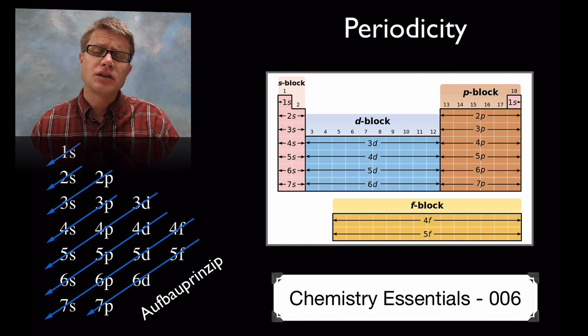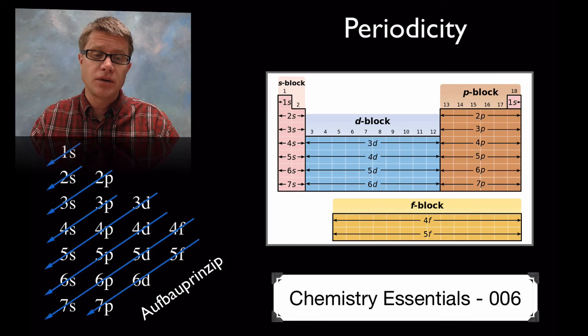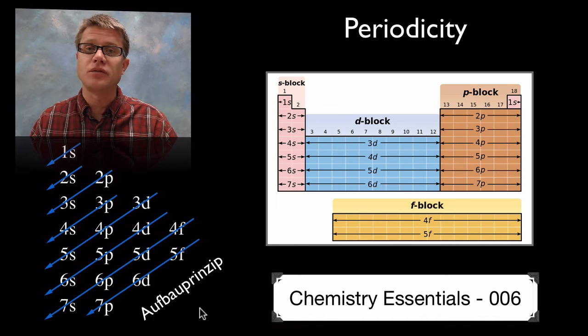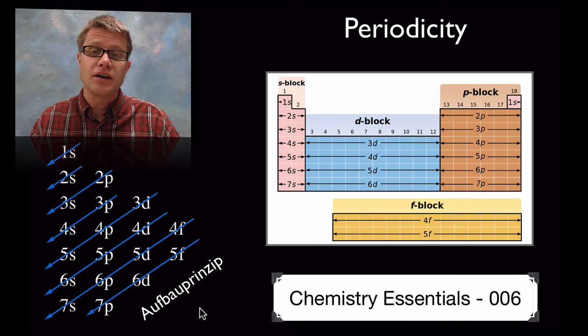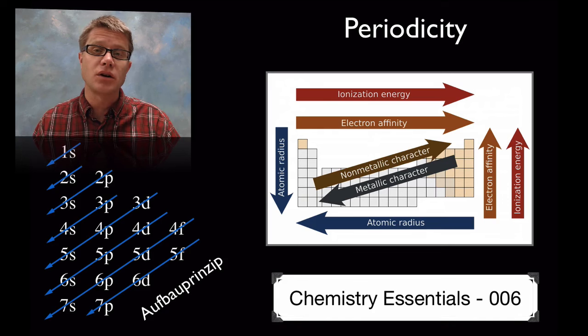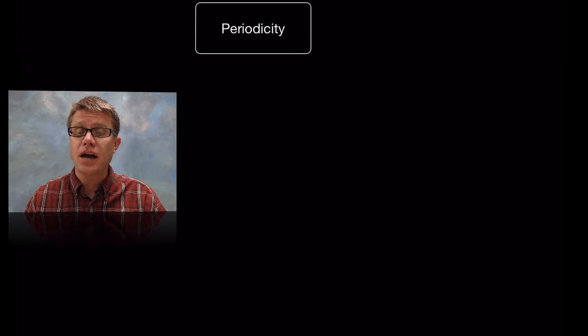Now what determines that is going to be electron configuration, and we can figure that out using the Aufbau principle, which is actually German and means the principle of building up. So we're building up from lower to higher energy levels, and what we can find is these trends that start to emerge. But it's most important instead of just memorizing them that you really understand what's going on inside the atom that determines those trends.